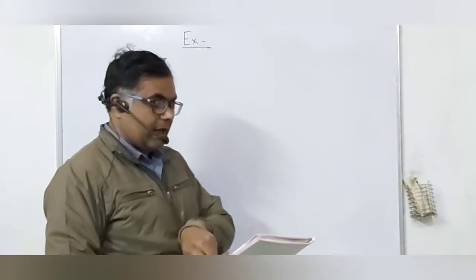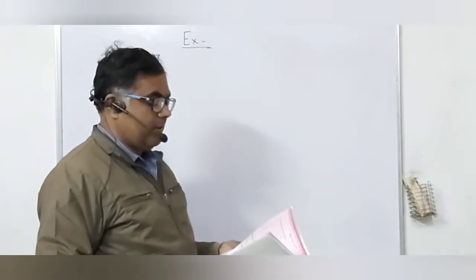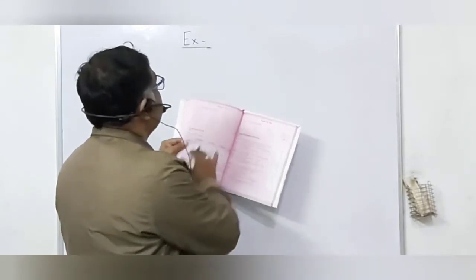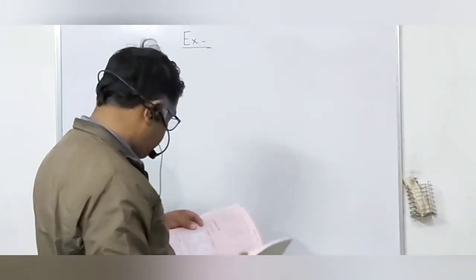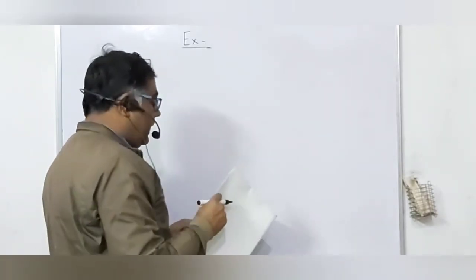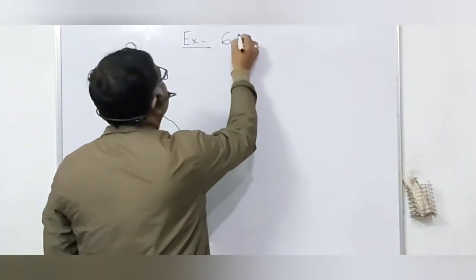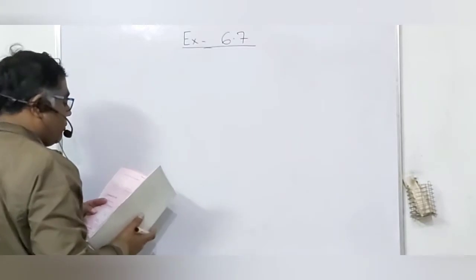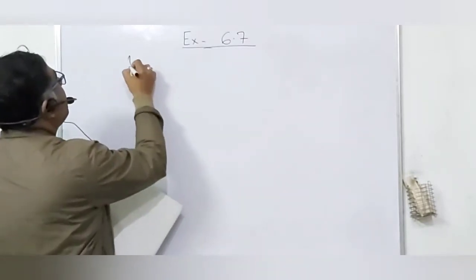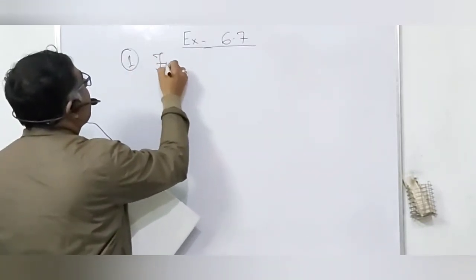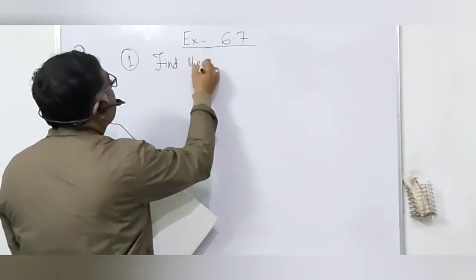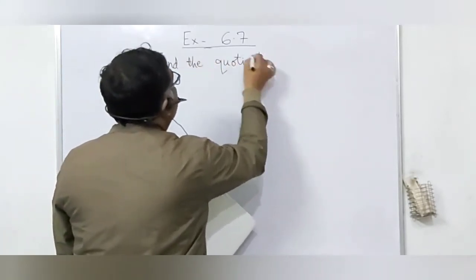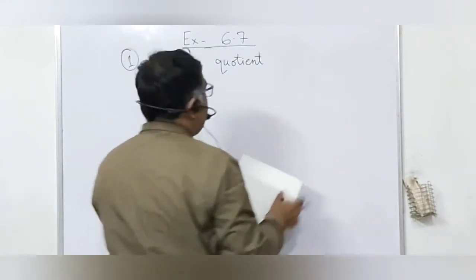Today's exercise is 6.7. Exercise 6.7: Find the quotient and the remainder.